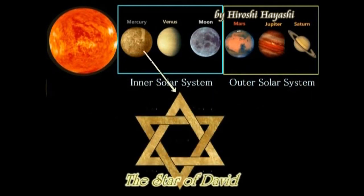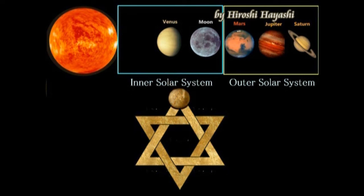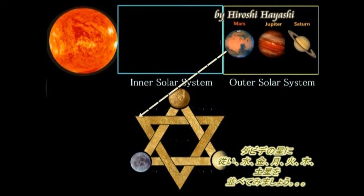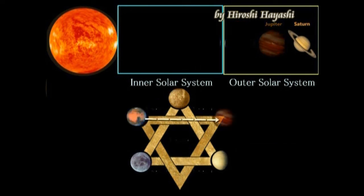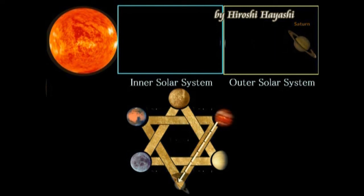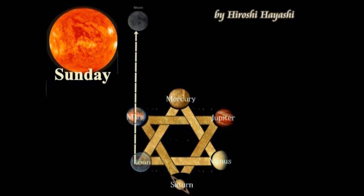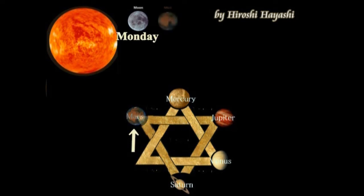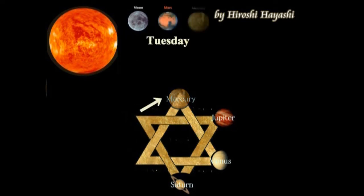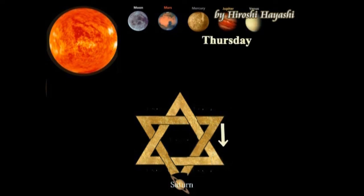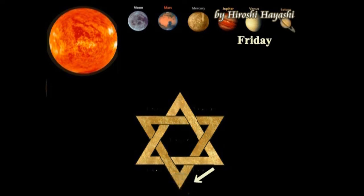それをダビデの星に当てはめてみます。縦三角が内惑星を表します。水星、金星、地球で内惑星ですね。今度は外惑星を置きます。火星、木星、土星と並びます。逆三角形は外惑星を表しているというわけです。これを順に読みますと、日、月、火、水、木、金、土と並ぶわけです。木星、金星、土星、そして私たちが現在使っている日月火水木金土の七曜日ができたと、私、林博士は考えています。